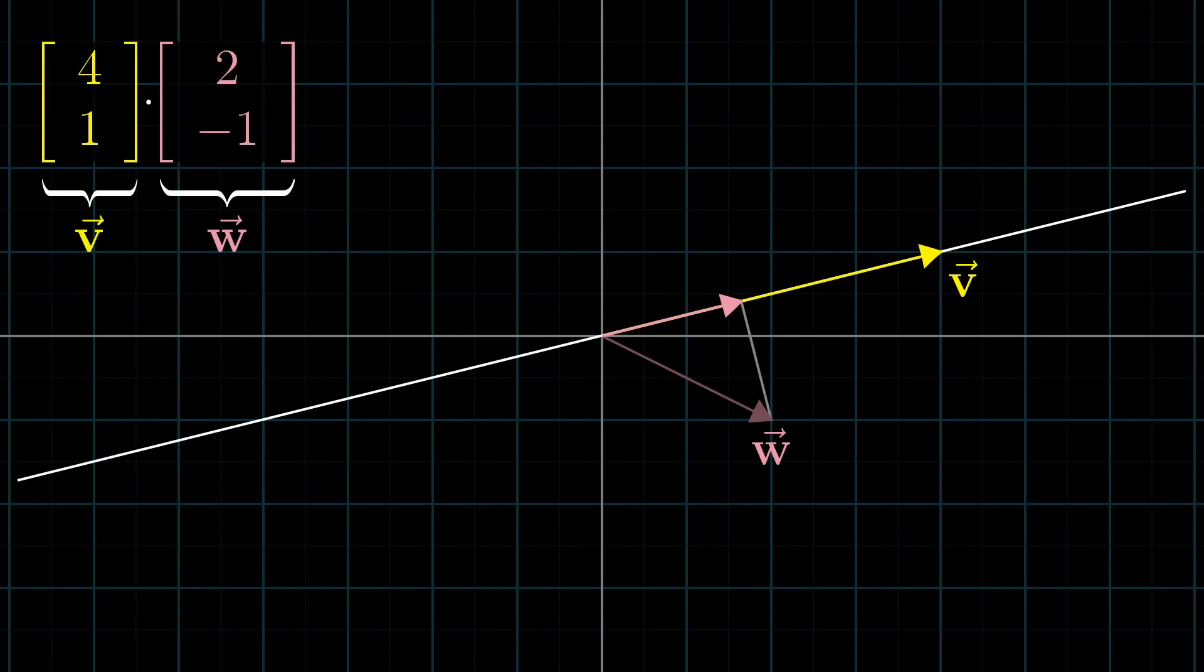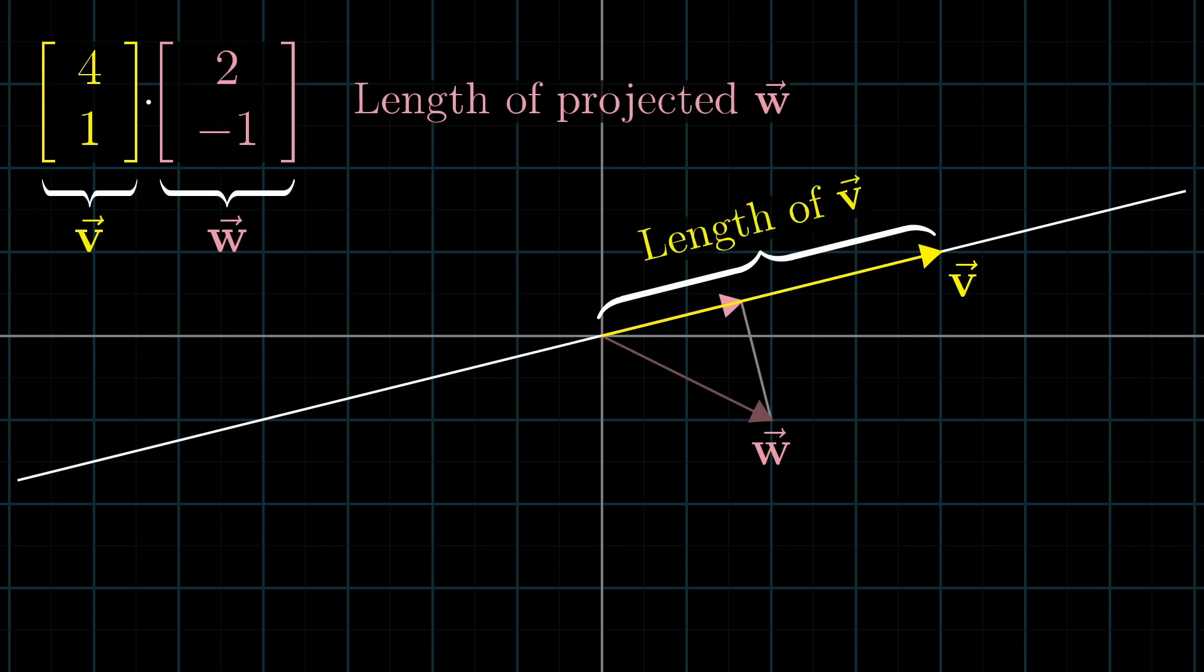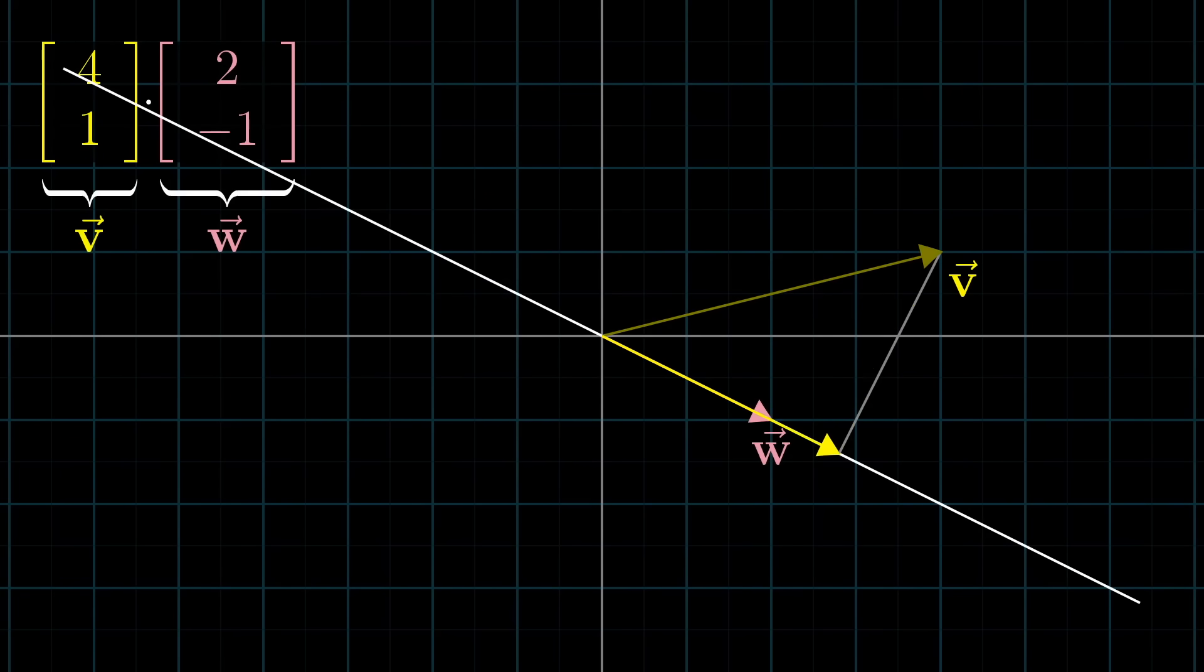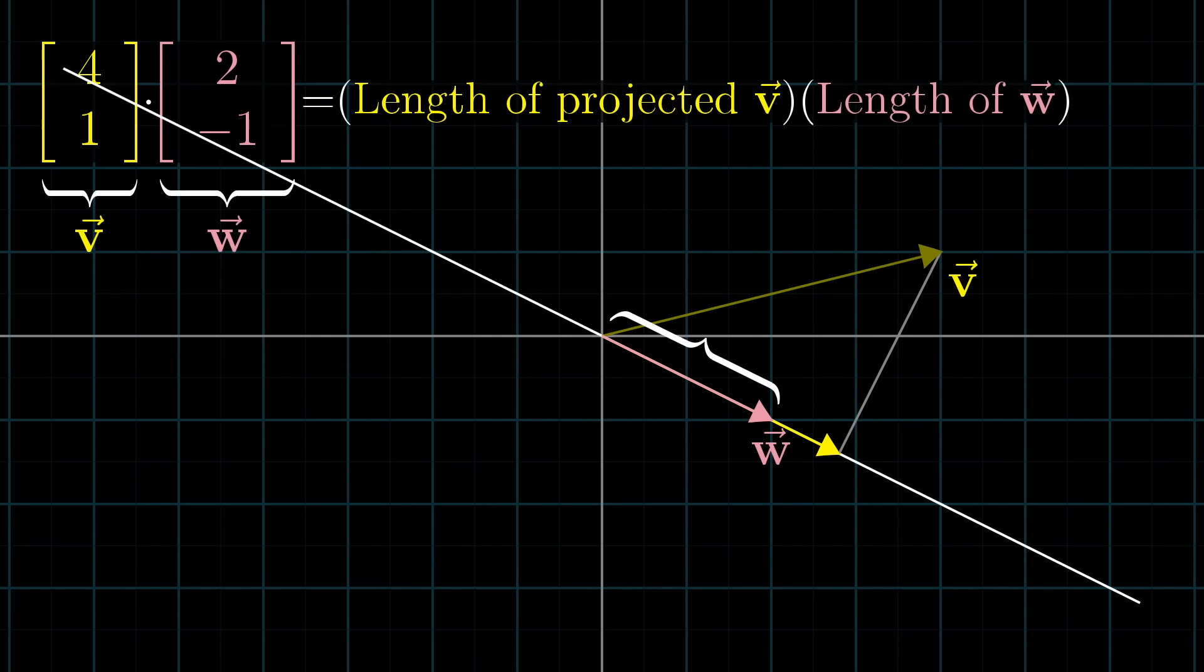Now, this interpretation is weirdly asymmetric. It treats the two vectors very differently. So when I first learned this, I was surprised that order doesn't matter. You could instead project v onto w, multiply the length of the projected v by the length of w, and get the same result. I mean, doesn't that feel like a really different process?